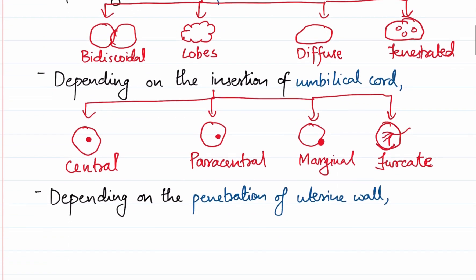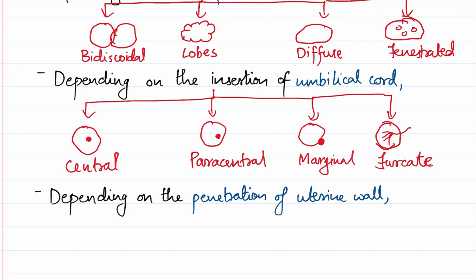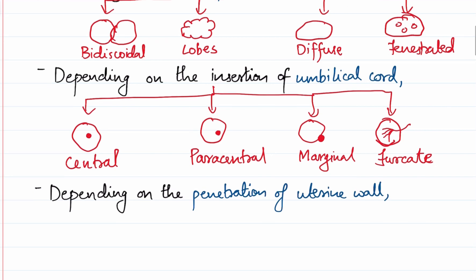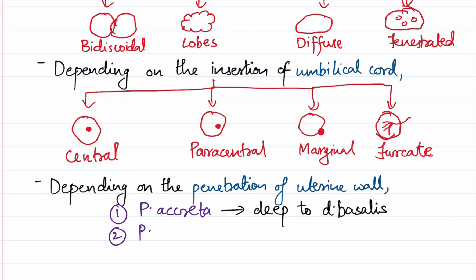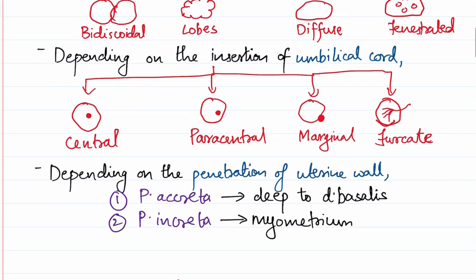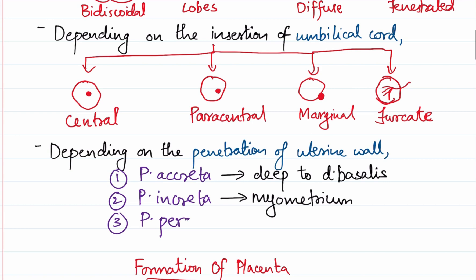Now moving on to the penetration of the uterine wall. After implantation, placenta formation takes place. Depending upon how deep into the uterus the placenta is located — whether within the endometrium, or extending up to the myometrium, or involving the whole uterine wall — placenta is divided into three types. If the placenta extends deep to the decidua basalis within the endometrium, we call it placenta accreta. If the placenta involves the myometrium, it is called placenta increta. And if the placenta involves the whole of the uterine wall, it is called placenta percreta.